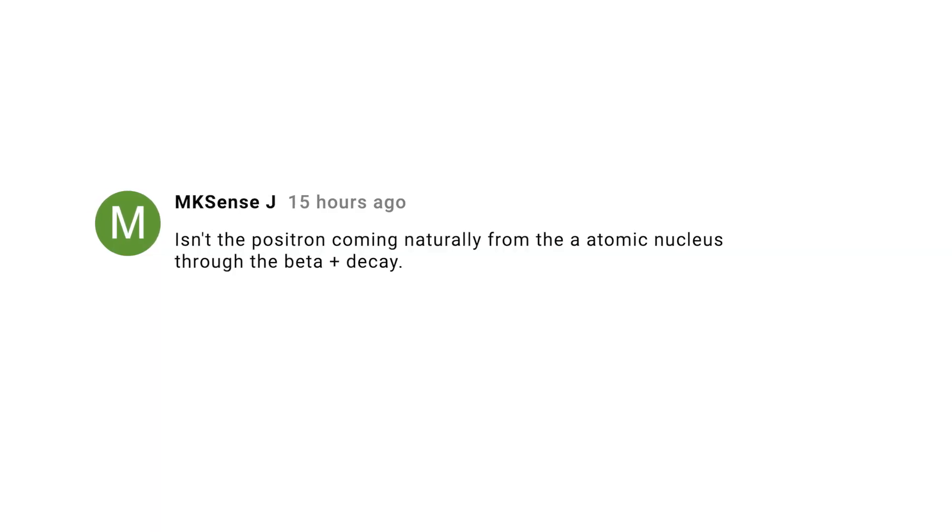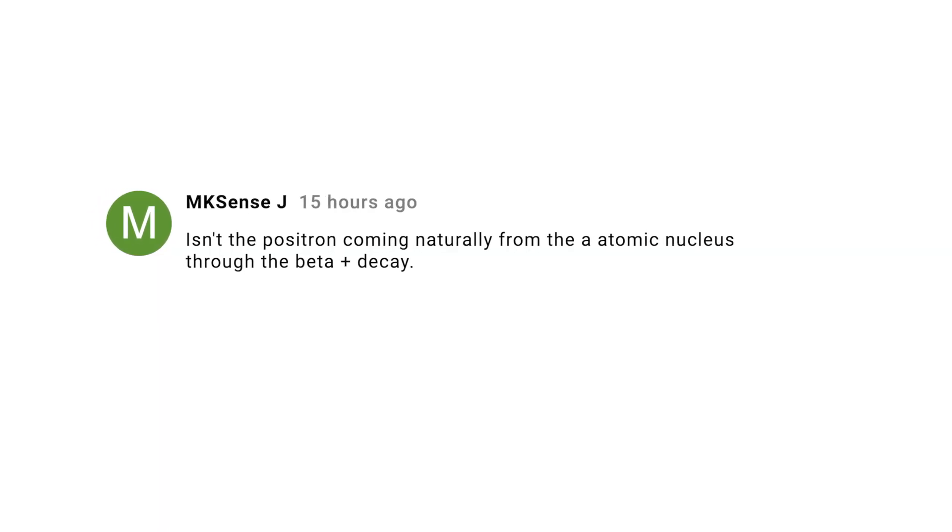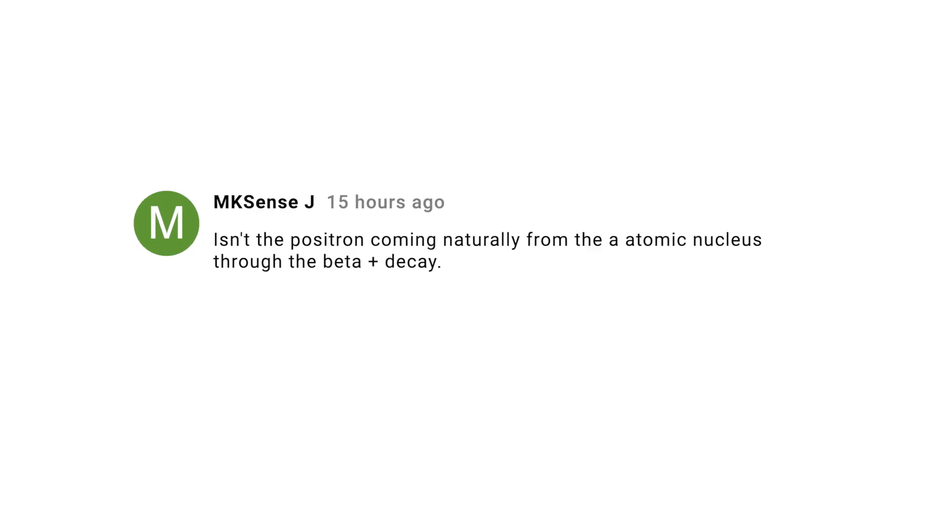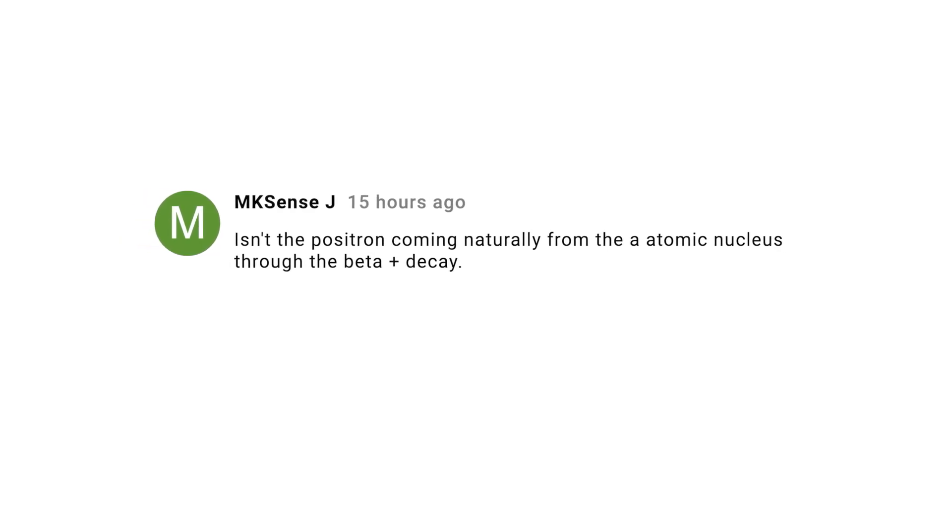Make Sense J points out that positrons are emitted in certain forms of radioactive decay, and positrons are antimatter. Yep, that's right. Antimatter is also made in particle accelerators. It's not that antimatter doesn't exist — we've discovered it and know a great deal about its properties. It's that the primordial antimatter has disappeared. That's the mystery.